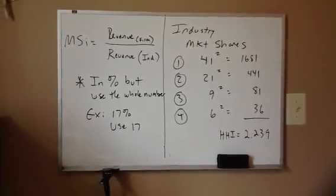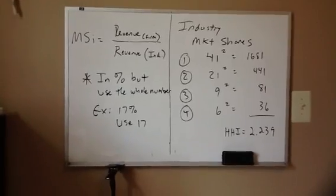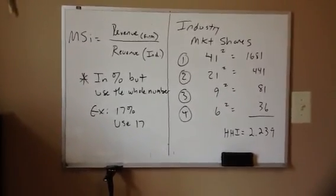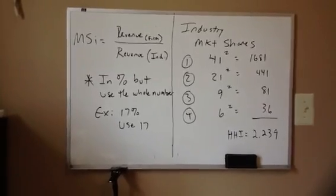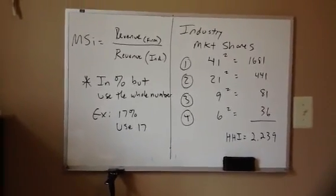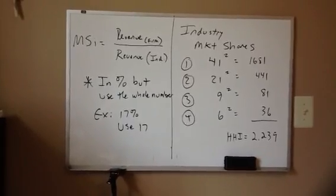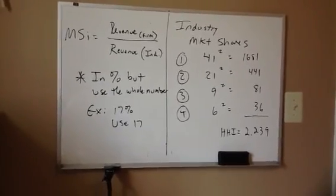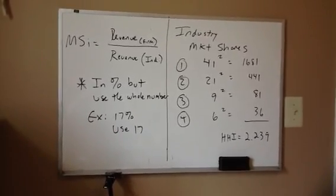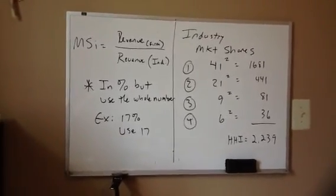So, we could have a CR4 of 77 where we have four equal competitors of about 19% or 20% apiece, and in that case, our Herfindahl would be much lower. And that would tell us that the competitive effects are different and not as contentious as they would be with a higher Herfindahl level.